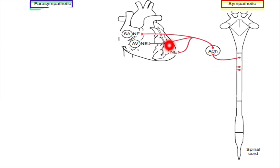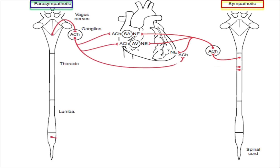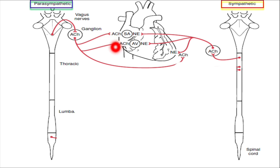The medial portions of the vasomotor center are the cardioinhibitory area. These send parasympathetic impulses through the vagus nerve to the heart, as shown in the figure. The postganglionic parasympathetic fibers secrete acetylcholine, which acts on the heart and serves to decrease heart rate and force of contraction. In this way the vasomotor center is a very important regulator of cardiac output.